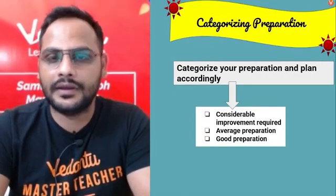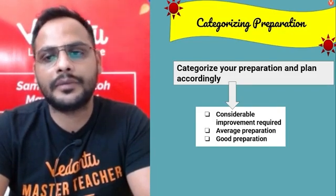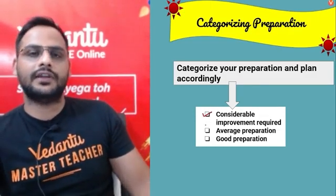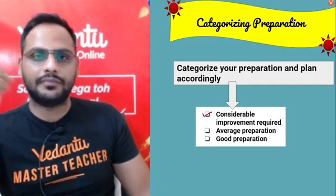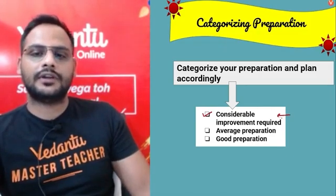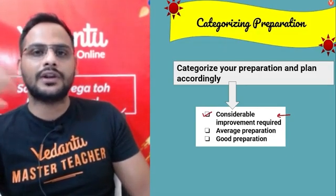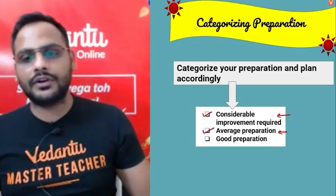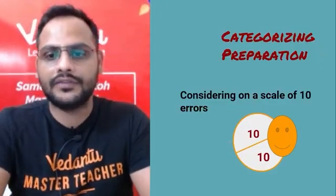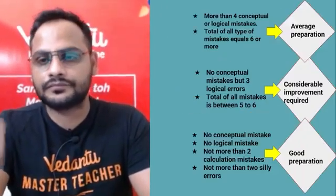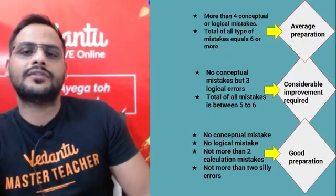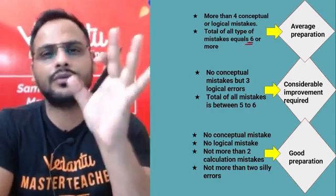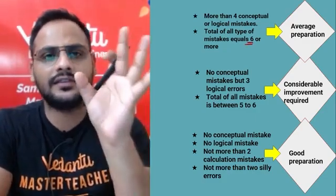Plan your preparation in three categories. If you require considerable improvement — you could not recall anything and scored very poorly on the test — prepare accordingly. If you did nicely but can do better, that is average preparation. If you did really well but are missing one or two points, plan for good preparation. For average preparation, you are making more than four conceptual or logical mistakes, with an overall total around six or more mistakes.